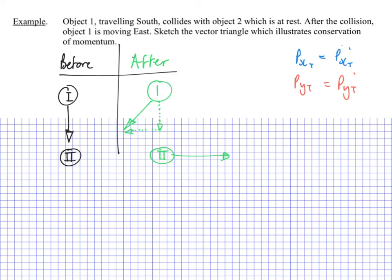So I can now use my tail to tip skills to put this together. So let's go ahead and do a before vector. So my before vector is going to be going dead south. This is the total momentum before. And this will include, I'm just going to put this in brackets, this is for ball one, and for ball two. Because ball two has nothing, and ball one is entirely going south.